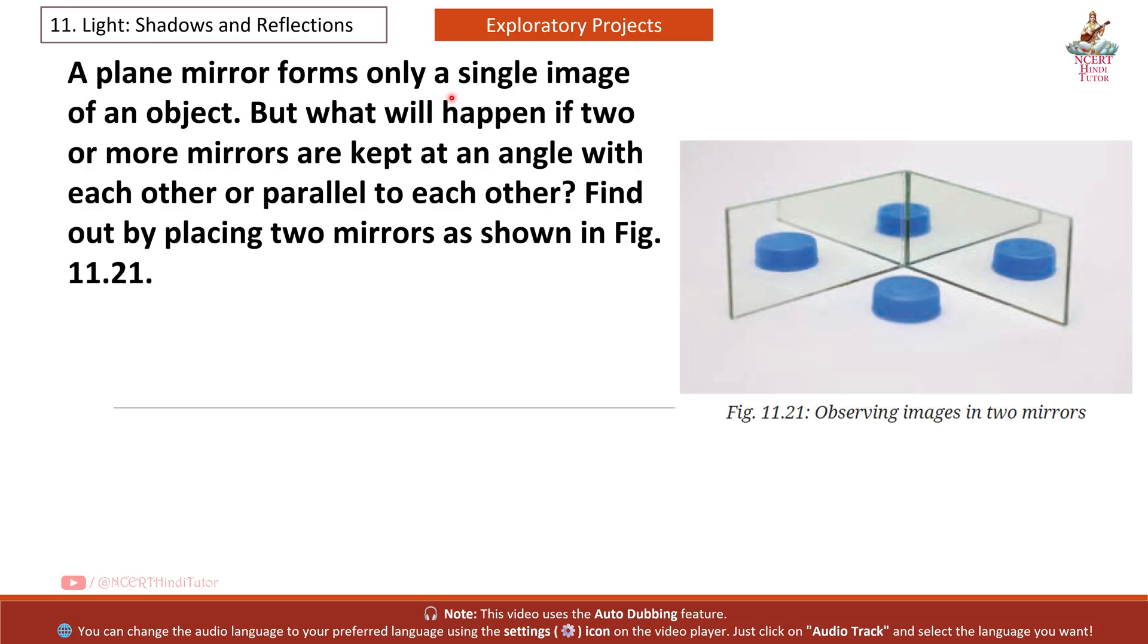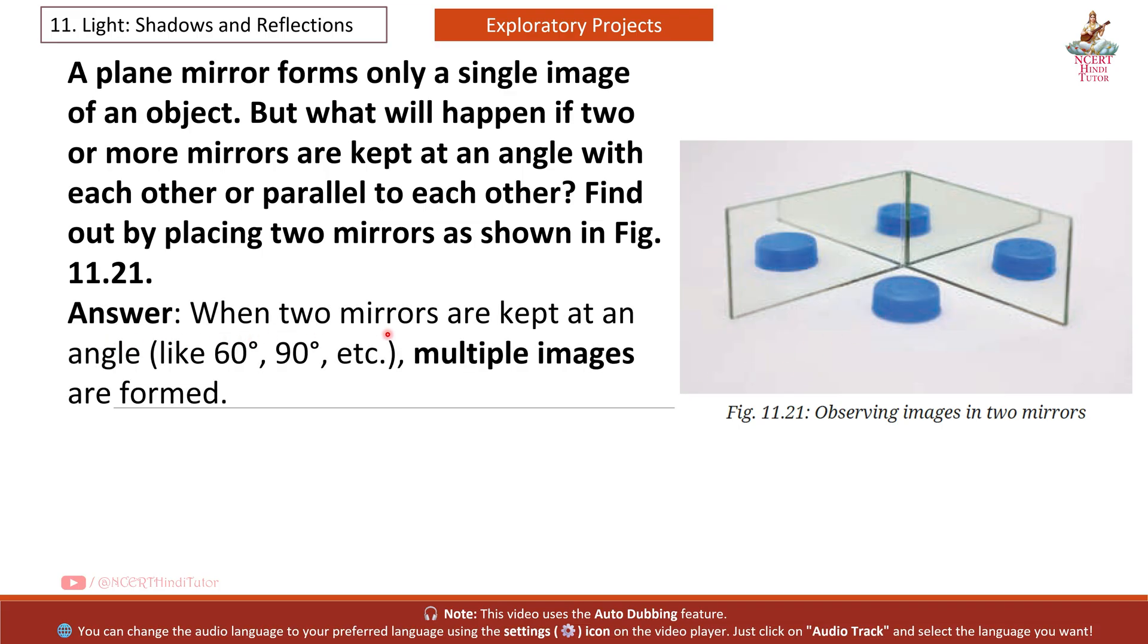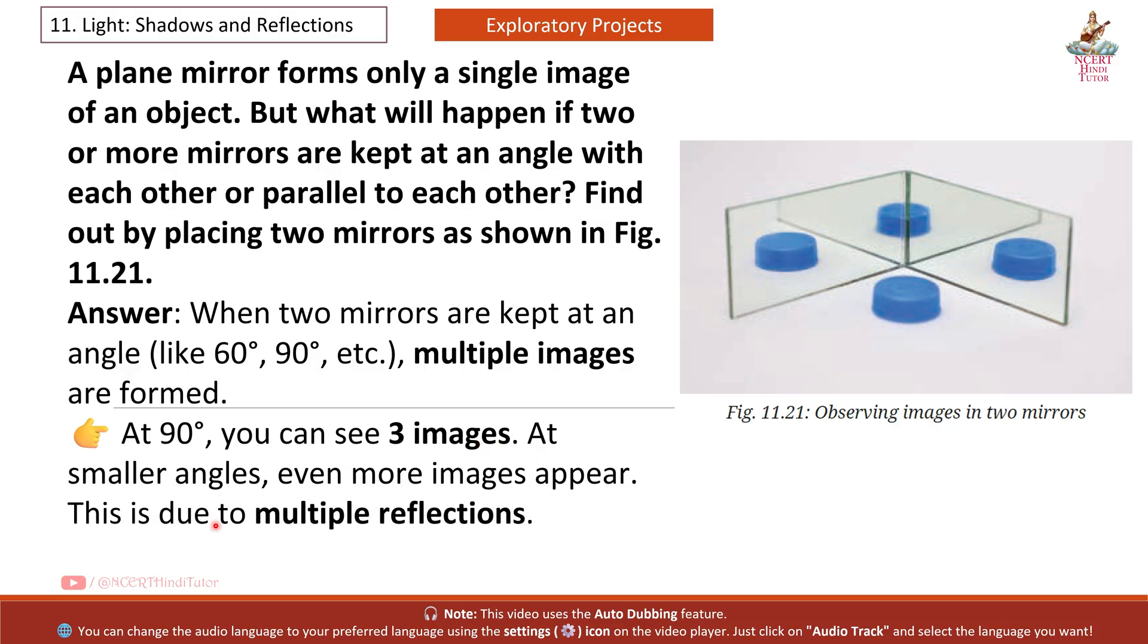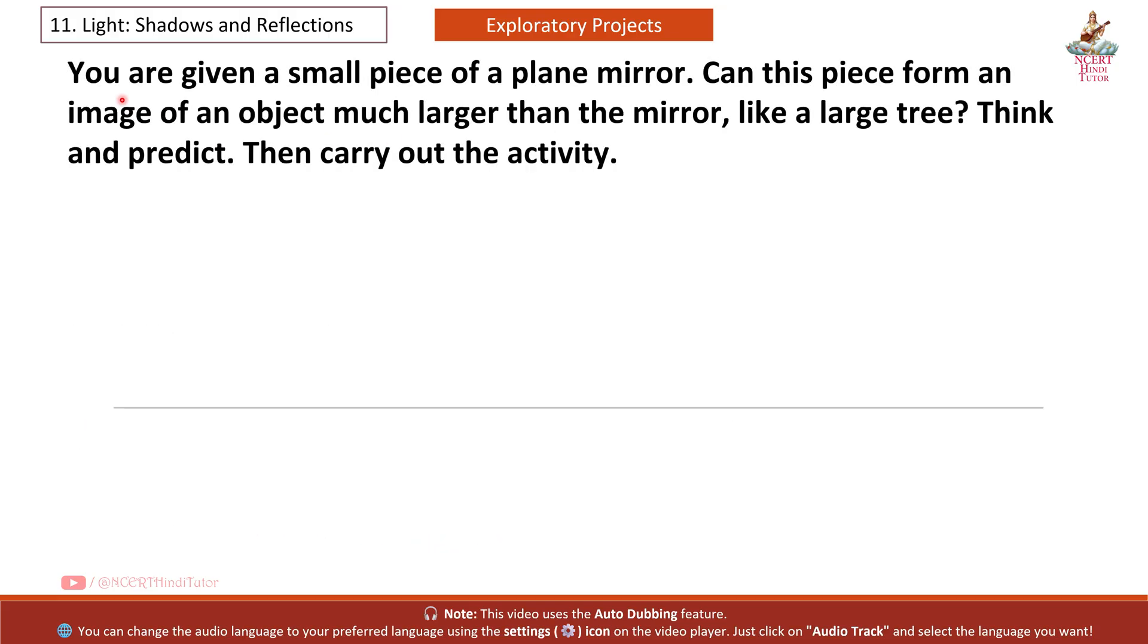Next question: A plane mirror forms only a single image of an object, but what will happen if two or more mirrors are kept at an angle with each other or parallel to each other? Find out by placing two mirrors as shown in figure 11.21. Answer: When two mirrors are kept at an angle like 60 degree, 90 degree, etc., multiple images are formed. At 90 degree, you can see three images. At smaller angles, even more images appear. This is due to multiple reflections.